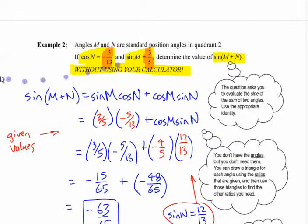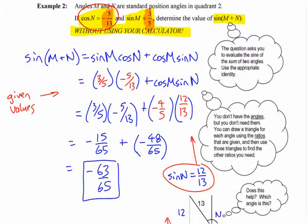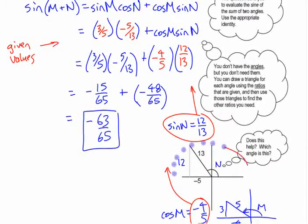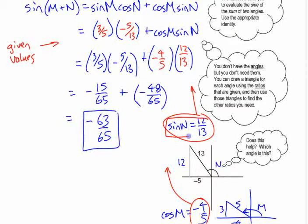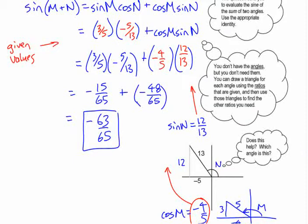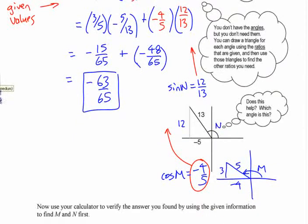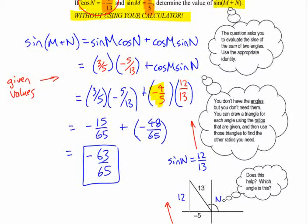If you know a single trig ratio, you can find the others as a fraction without even finding the angle — you don't need your calculator. If you know that cosine of n is negative 5/13, draw a triangle in quadrant two so that the cosine is 5/13. Use Pythagoras to figure out the other side is 12, and that tells you that sine is 12/13. You can use that value for sine of n. Similarly, set up a triangle for angle m, work out that cosine is negative 4/5, and that value can go in. And you can work it all out.